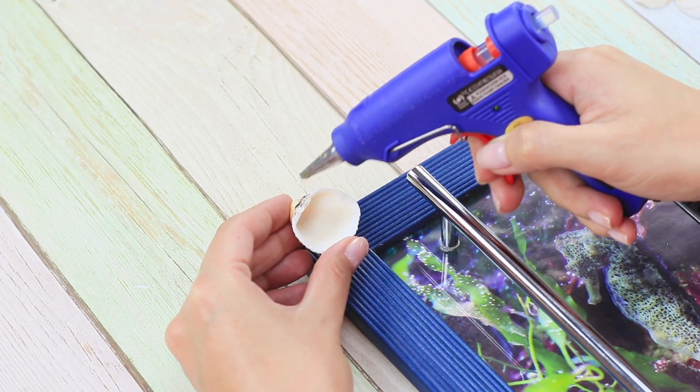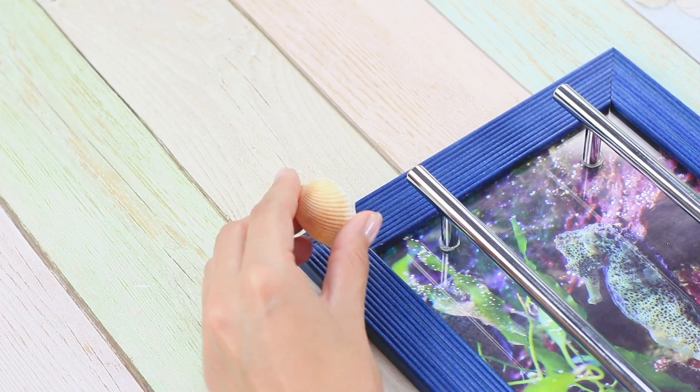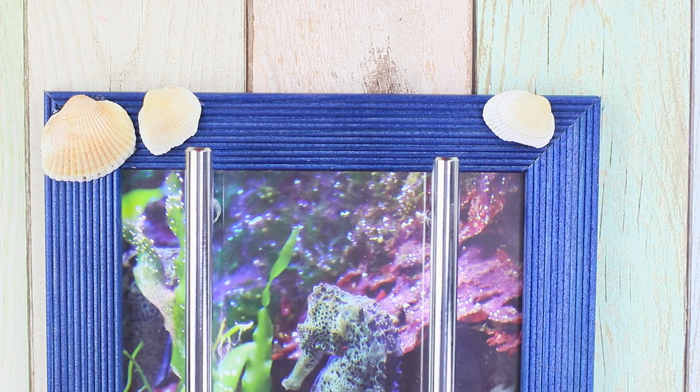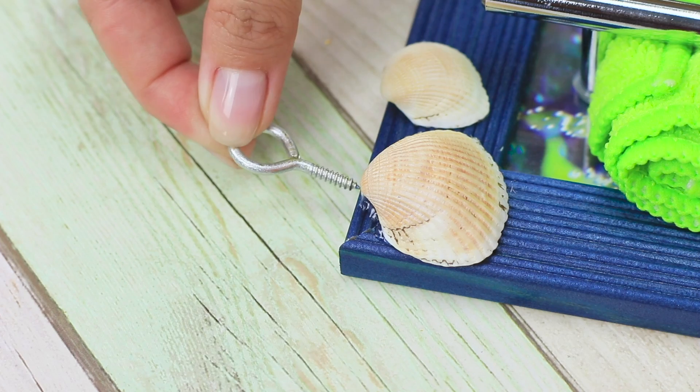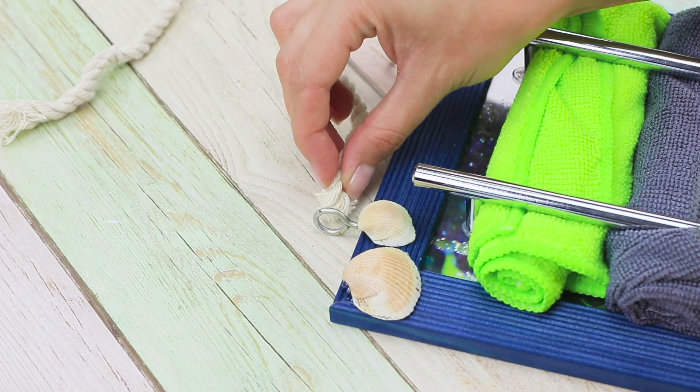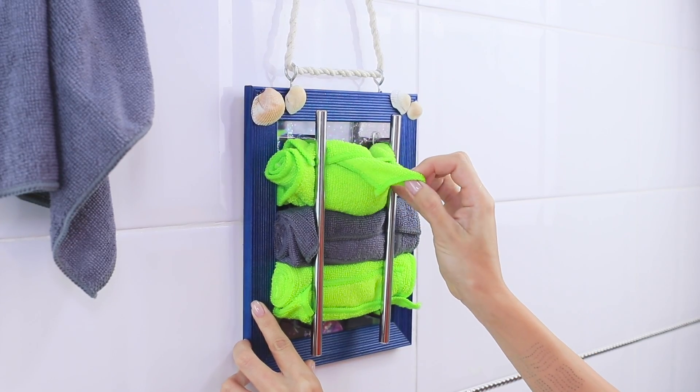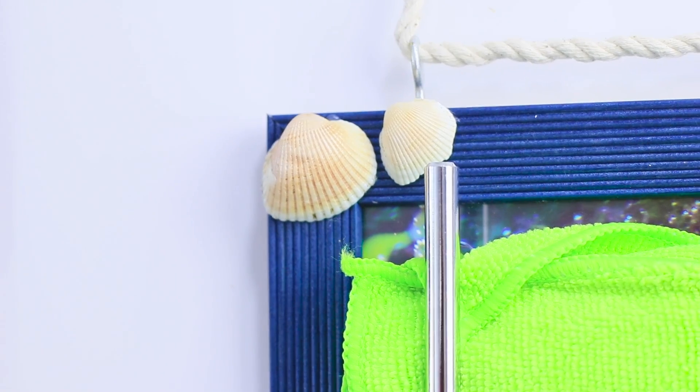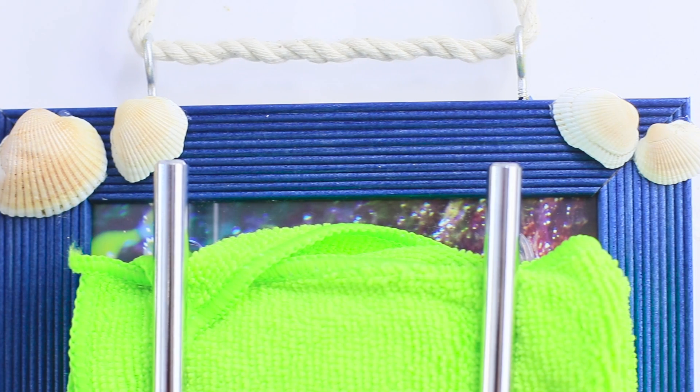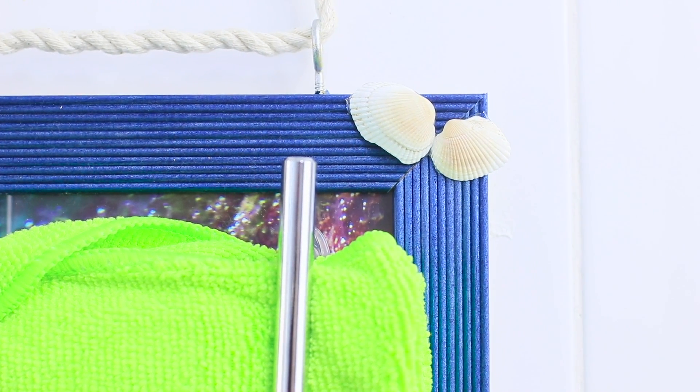A couple more things! Glue some seashells to the frame. Fasten metal rings on screws. Run a rope through them and hang the painting on the wall. How can you store towels so that they are always accessible but also look good? A painting is a creative alternative to boring hooks!